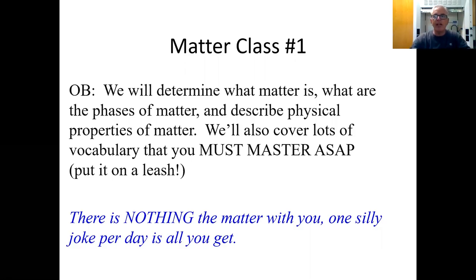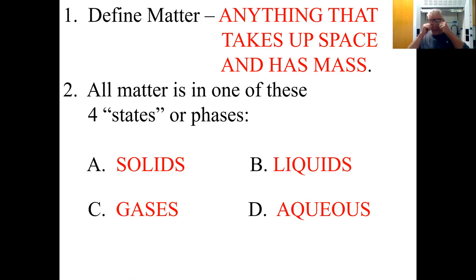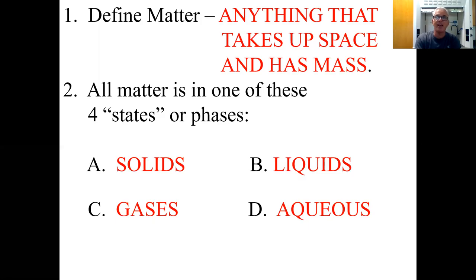So define matter. Matter, literally in chemistry or in reality, is anything that takes up space and has mass. That means really big things and really small things. A blue whale takes up a lot of space and has a lot of mass. An atom or even an electron takes up very little space but still has mass. Everything that is something has mass and takes up space — you can't have one without the other.